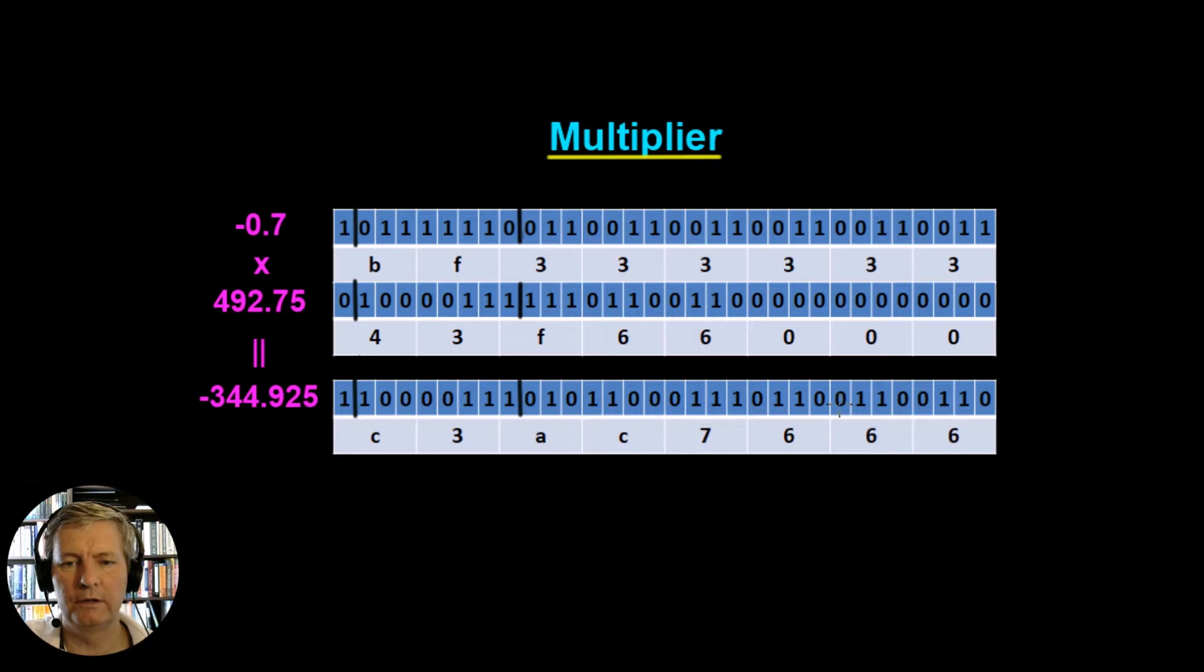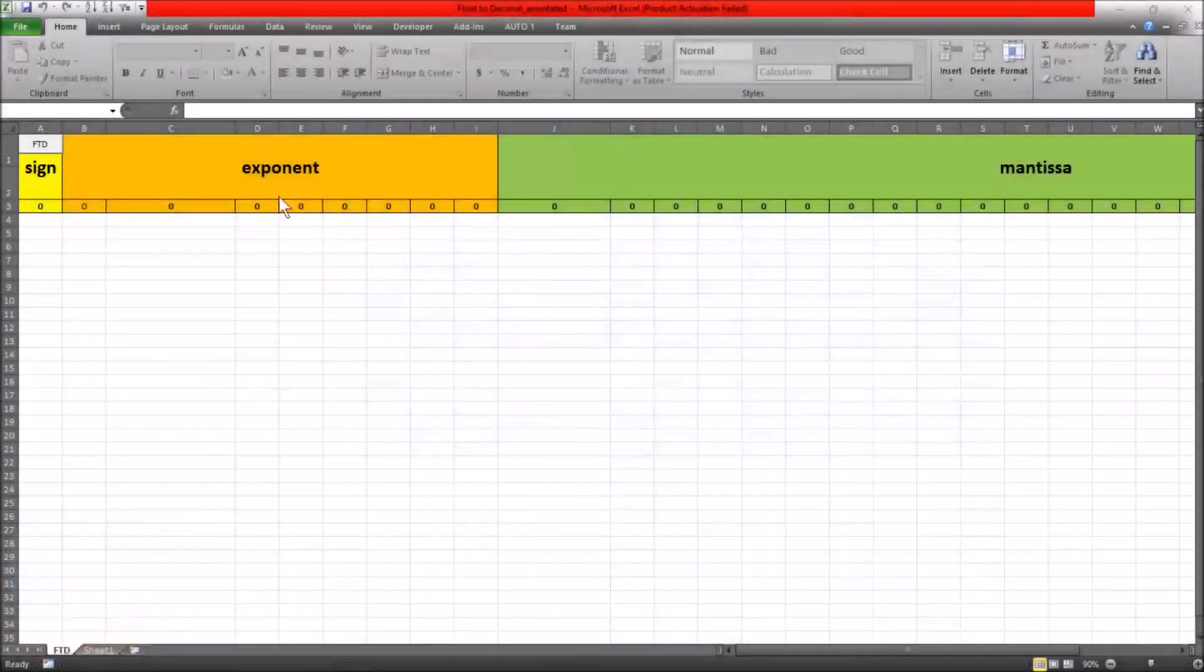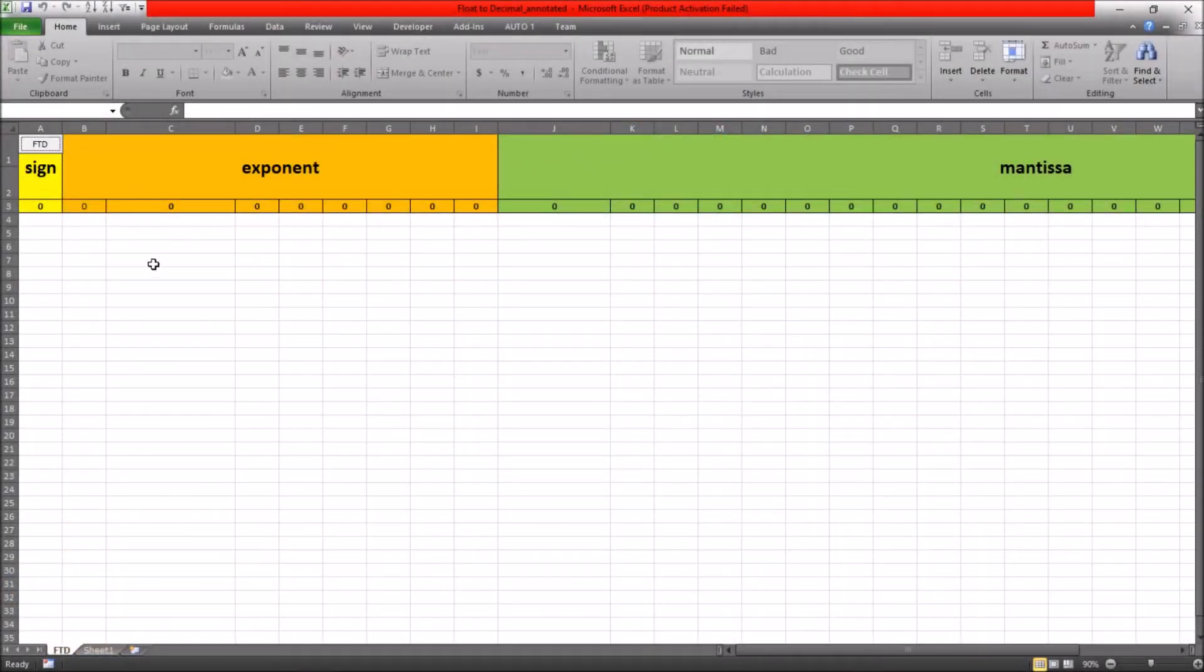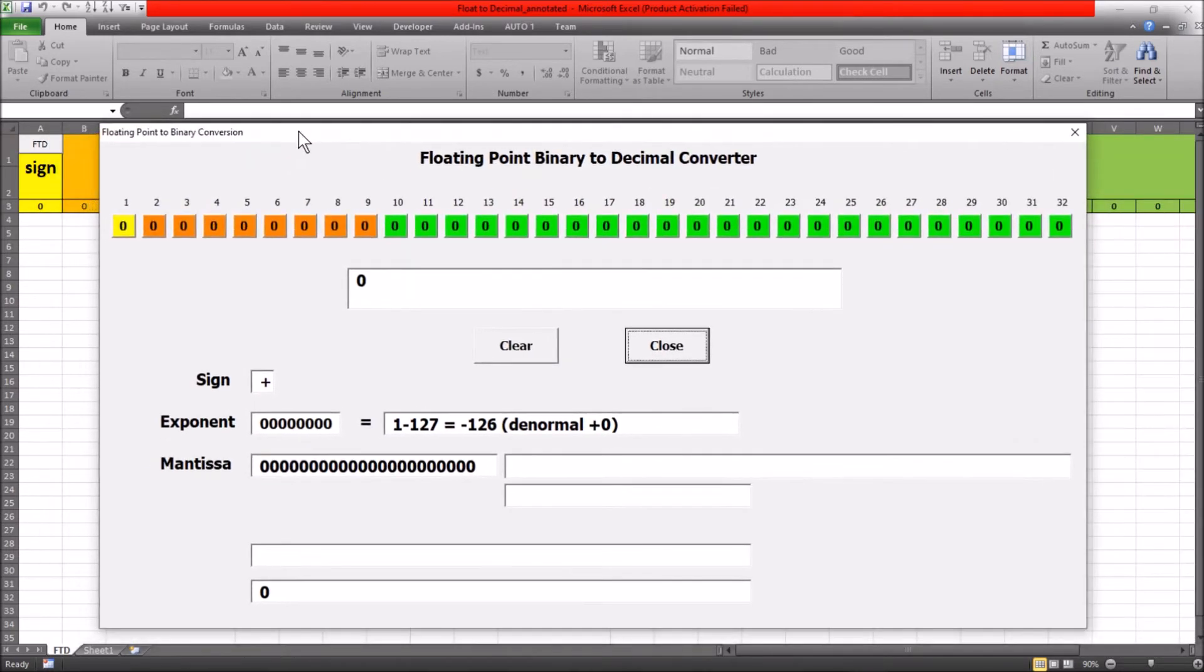What we could do is we could stick those into our little spreadsheet that does the conversion. I've left that spreadsheet in the resources section, so you can go and open that up now and we'll check these numbers out. This is our conversion tool here. Click on the little button in the top left hand corner and we'll put the values in.